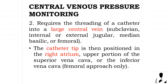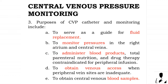Central venous pressure monitoring requires threading a catheter into a large central vein — subclavian, internal or external jugular, median basilic, or femoral. The catheter tip is then positioned in the right atrium, upper portion of the superior vena cava, or the inferior vena cava for the femoral approach only.